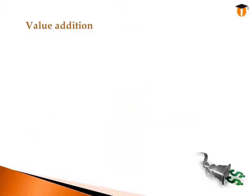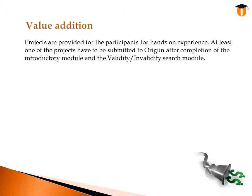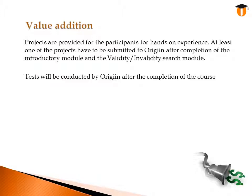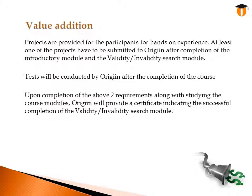Value Addition: Projects are provided for participants for hands-on experience. At least one of the projects has to be submitted to Origin after completion of the introductory module and the Validity Invalidity Search Module. Tests will be conducted by Origin after the completion of the course. Upon completion of these two requirements, along with studying the course modules, Origin will provide a certificate indicating the successful completion of the Validity Invalidity Search Module.